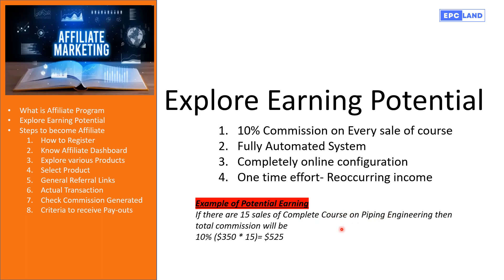Let us take an example. There is a complete course on Piping Engineering priced around $350 per course, which includes 500+ recorded lectures, 160+ quizzes, 45+ assignments, and covers piping basics, codes and standards, layout design, material engineering, and stress analysis — everything in great detail. Suppose in a month you get sales of 15 courses; 10% commission will be around $525. This is just an example — it may be lower or higher. This is the earning potential on EPC Land platform.